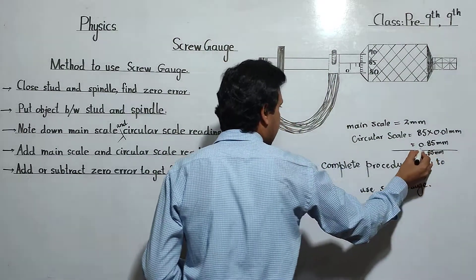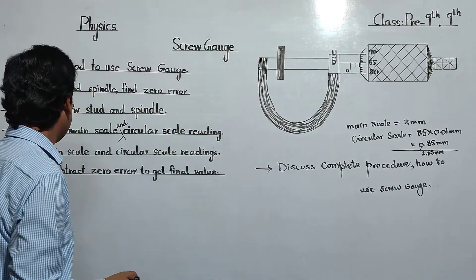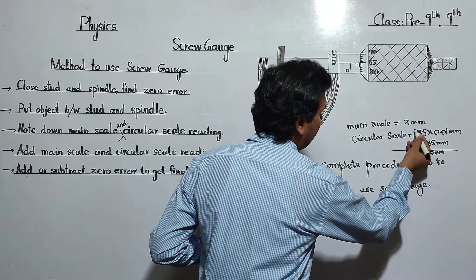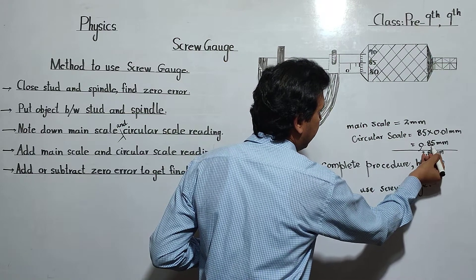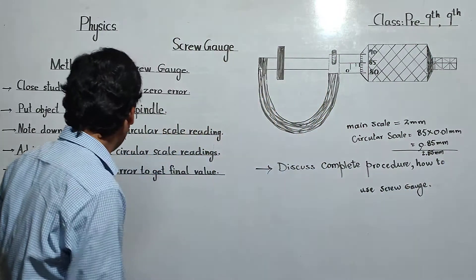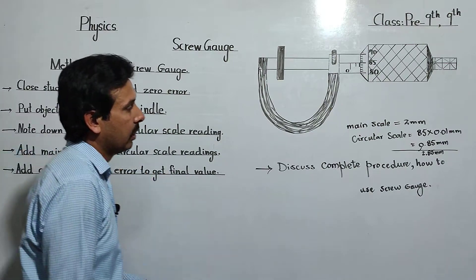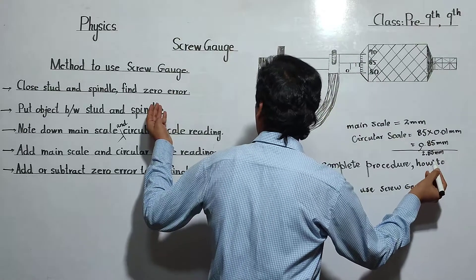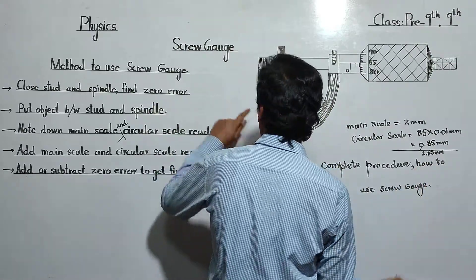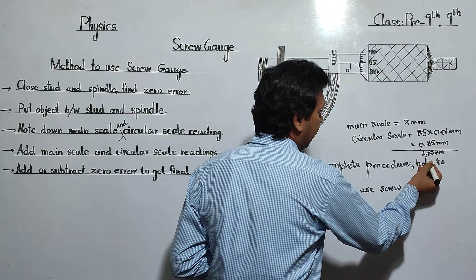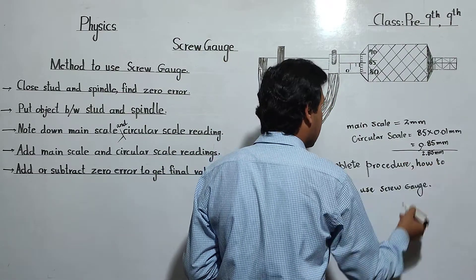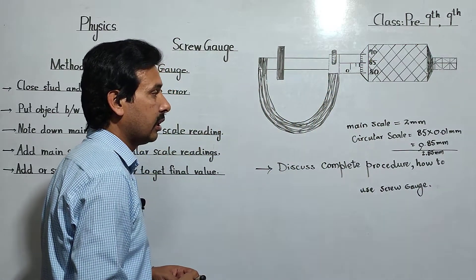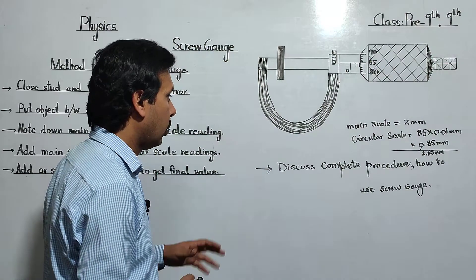Adding 2 mm and 0.85 mm gives us 2.85 mm. This is the addition of the main scale and circular scale readings. However, this is not yet the actual value. The last step is to add or subtract the zero error to get the final result. If you found a zero error in the first step, you will subtract or add it to this result, and whatever value you get after that correction is your final result.